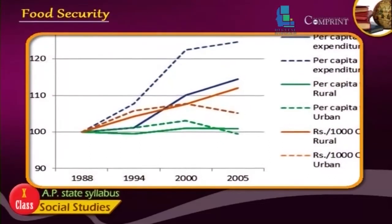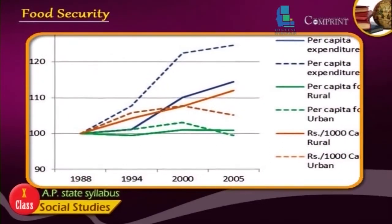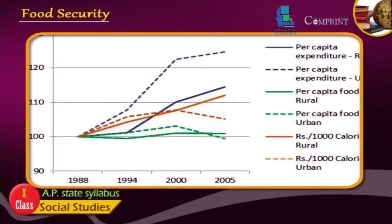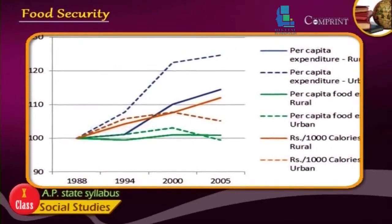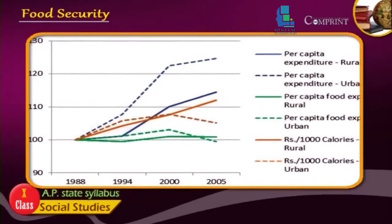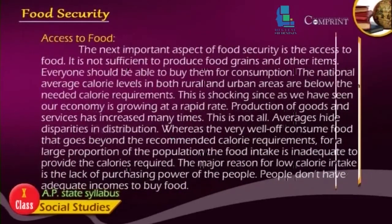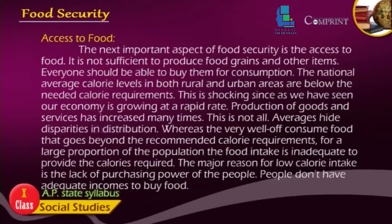This is because averages hide disparities in distribution. There are those who consume food well beyond the recommended calorie requirements, while for a large proportion of the population the food intake is inadequate to provide the calories required. The major reason for low calorie intake is lack of purchasing power — people do not have adequate incomes to buy food.